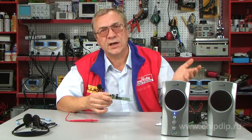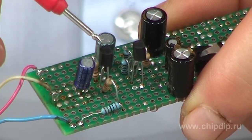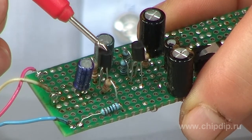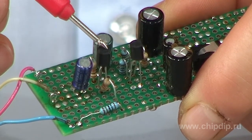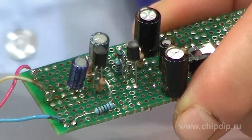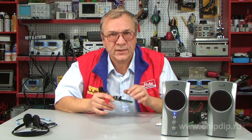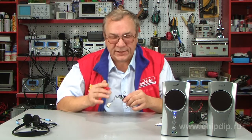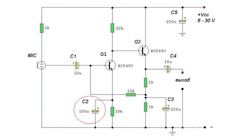The first cascade of the Q1 transistor works at low collector current. This promotes a high signal-to-noise ratio and a low level of noise at the outlet of the amplifier. The emitter resistor of the first transistor is shunted by the C2 capacitor, allowing a maximal amplification of the first cascade.